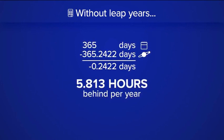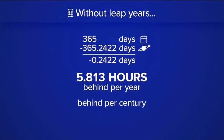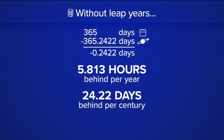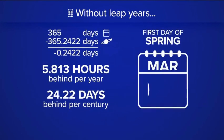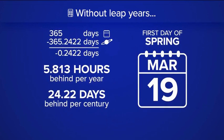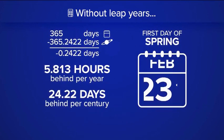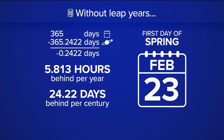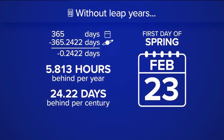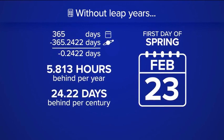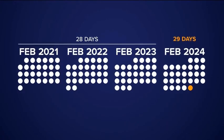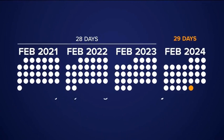In 100 years, our calendars would be off 24 days. So for example, instead of the first day of spring being on March 19th, without a leap year it would be on February 23rd and so on. To help synchronize the time, the solution introduced centuries ago is to add one day every four years.